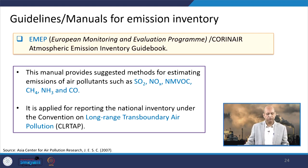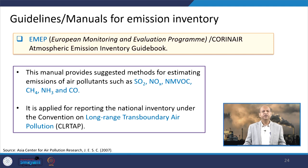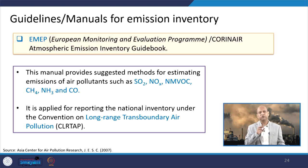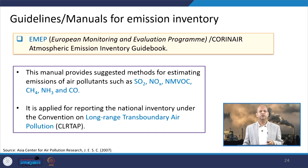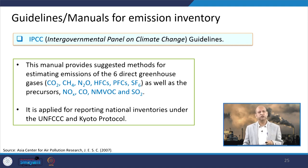EMEP gives manuals for pollutants like SO2, NOx, NMVOC (non-methane VOC), methane, ammonia, CO2, and CO. It is applied for reporting national inventories under the Convention on Long-Range Transboundary Air Pollution. Different member countries submit emission inventories following this guideline. Similarly, IPCC member countries follow prescribed guidelines to submit to UNFCCC. UNDP has different manuals for SOx, NOx, NMVOC, CO, and other pollutants.